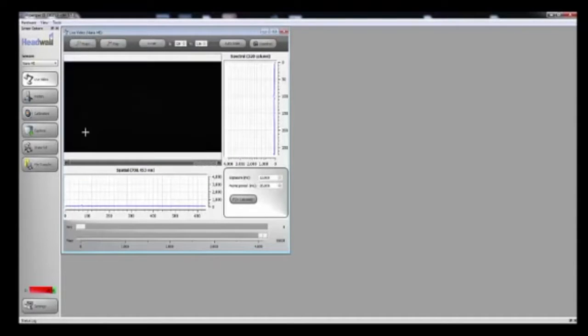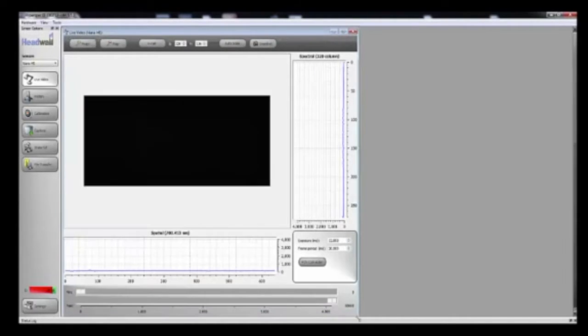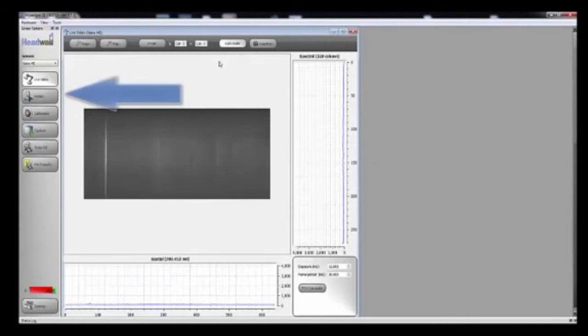Click the Live Video button to open that view, then expand it so that it's easier to see. Click the Auto Scale and Motion buttons.